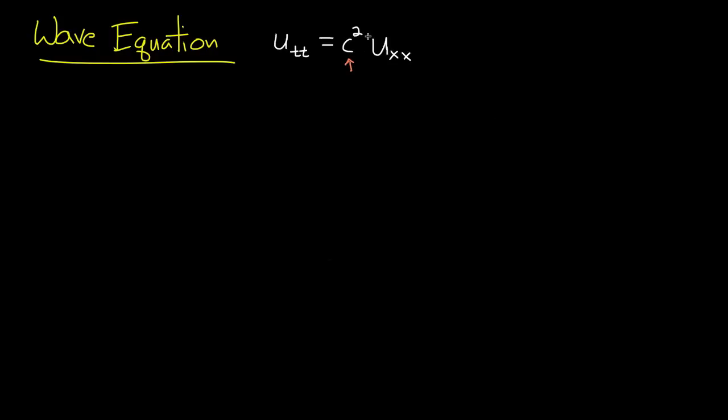The first reason is you can think of it as a reminder that this constant in front of u_xx needs to be positive. If I were to take something like u_tt equals minus u_xx, that would be a much different kind of equation. It would have different kinds of solutions,